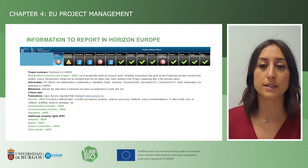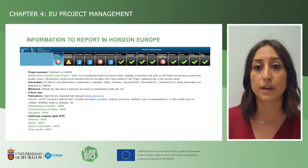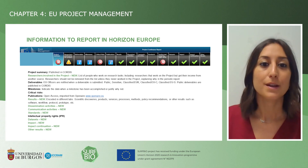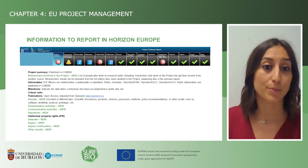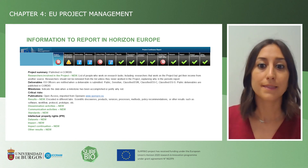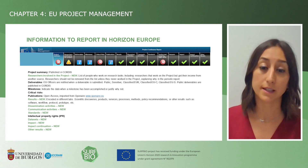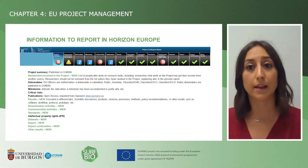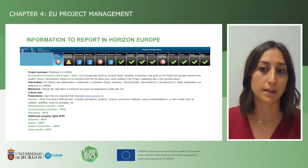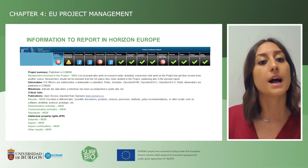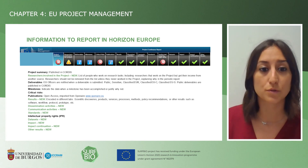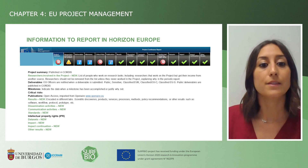Here is an example of the structure you will see for continuous reporting of a Horizon Europe project. There are some novelties compared to Horizon 2020, highlighted in green. You need a summary of the project that will be published in CORDIS. A novelty is that you must have a list of researchers involved in the project — people working on research tasks, including those whose income comes from a different source. Researchers should never be removed from the list unless the reason is clearly specified in the periodic report. As usual, there is a section for submitting deliverables, milestones, critical risks, and publications, which will be open access and imported from OpenAIRE. A new section is 'Results.'